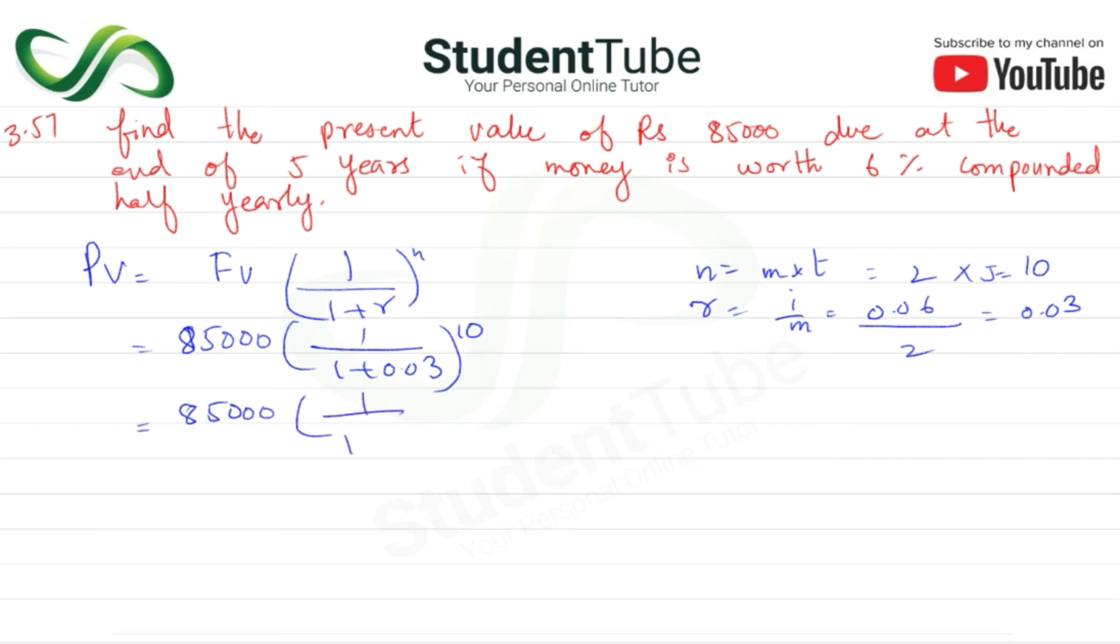Do no ko divide karke exponent nikal ke 85,000 se multiply karna hai, toh humara answer aayega 63248.00, kyunke value round off ho jayengi.